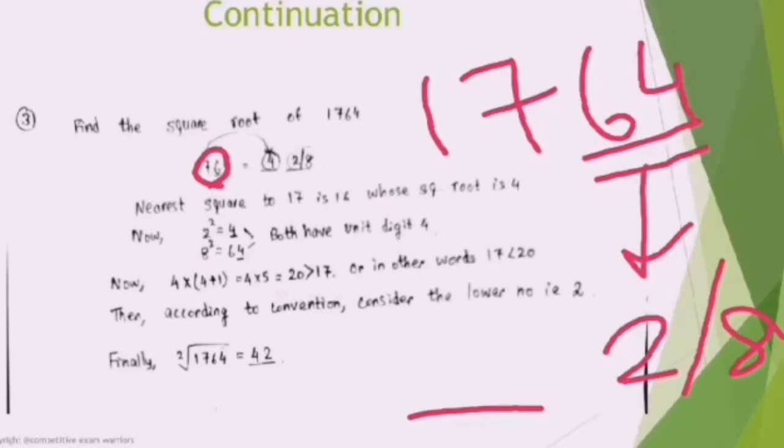According to the chart, whenever we do a square root of any perfect square number whose ending is 4, the unit digit will be either 2 or 8. So you need to find out whether it will be 2 or 8.